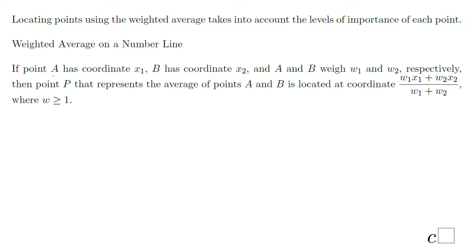We have two points, A and B, with these coordinates and this weight. How do we get the point P that represents the average of points A and B? We need to use this formula. Now, very important: W, the weight, has to be greater or equal to 1.